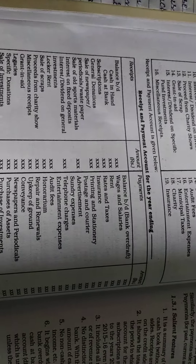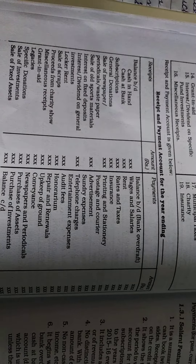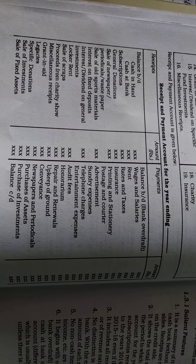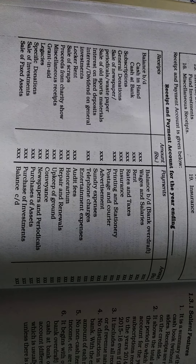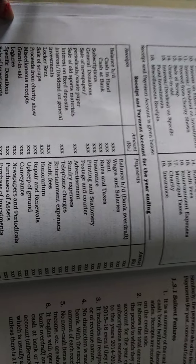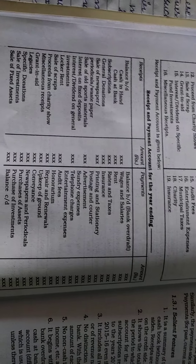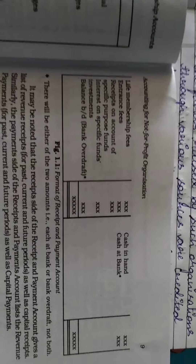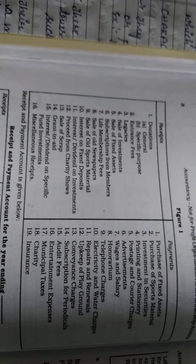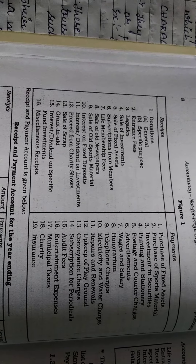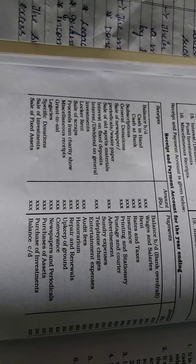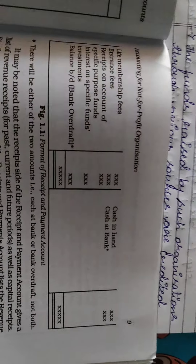I will show you the receipts and payment account pro forma for the year ending. This is the proper pro forma. Receipts are on the debit side and payments are on the credit side. It will be continued in the next page as well. Please take a screenshot of it and write it in your notes.